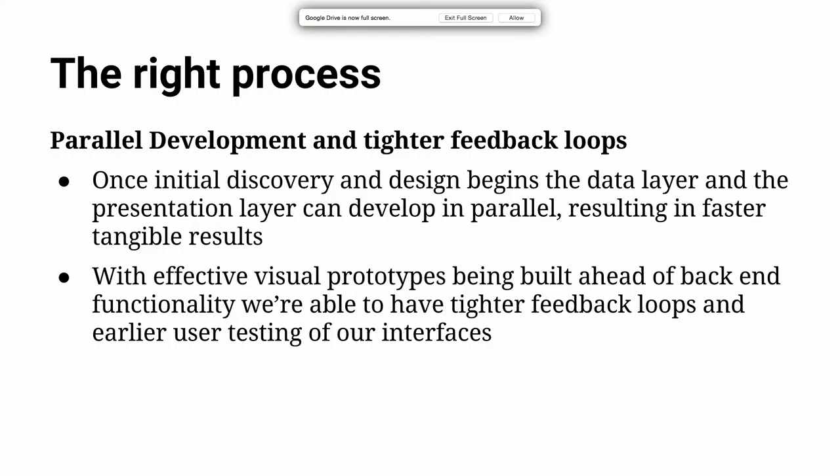Another part of the process is parallel development and tighter feedback loops. Once initial discovery and design begins, the data layer and presentation layer can develop in parallel — meaning faster tangible results for clients. They can see the front-end before it really does anything, which is actually quite useful and makes clients feel that things are progressing, versus showing them a completed unthemed Drupal website they can click through, which means nothing to them. Because we have effective visual prototypes being built ahead of back-end functionality, we can tighten our feedback loops, especially with user testing — getting those prototypes to users earlier gives us an earlier trajectory for user testing and feedback.